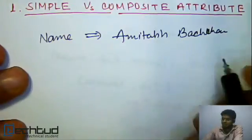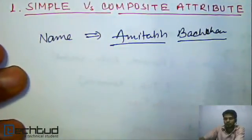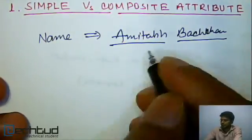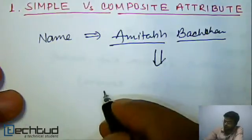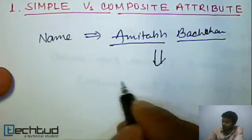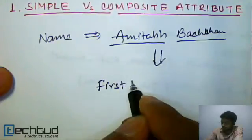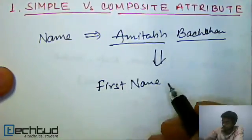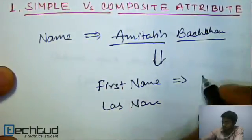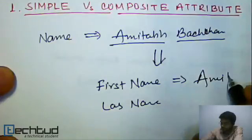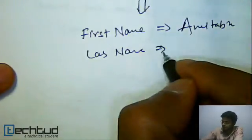This name has two values, so this is a composite attribute, because this attribute can be further divided into two attributes — that is first name and last name — where first name is Amitabh and the last name is Bachchan.